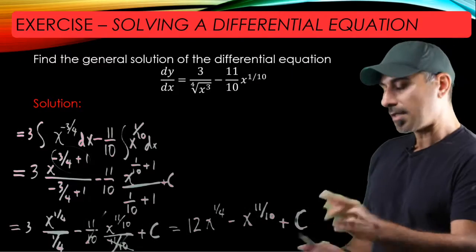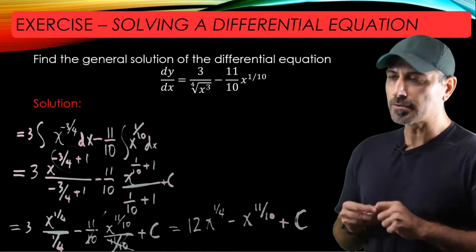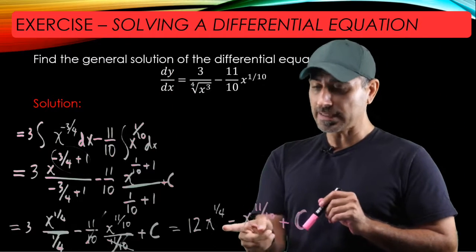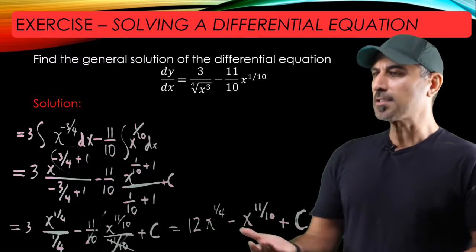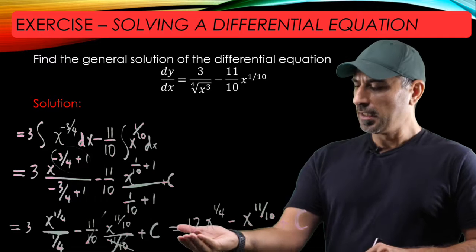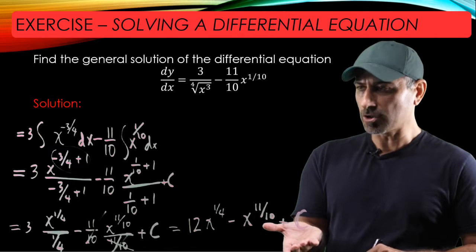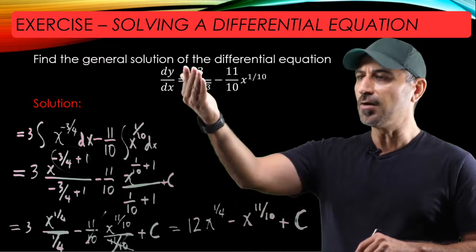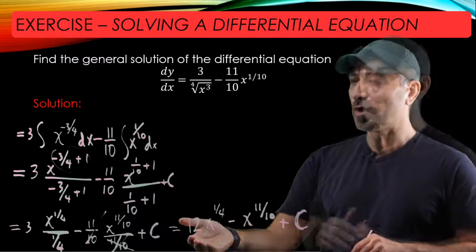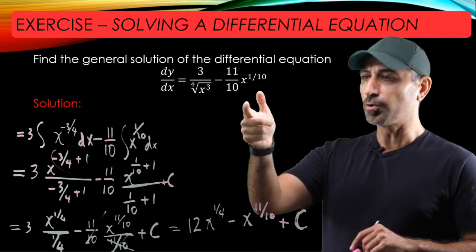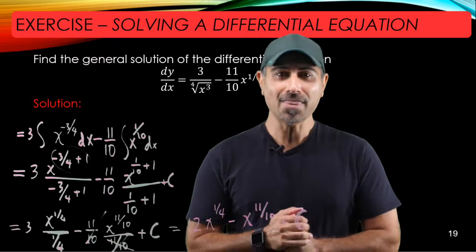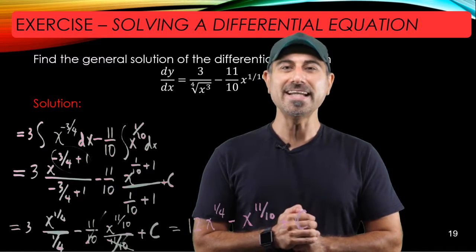So now y — the unknown function — is exactly equal to 12x^(1/4) + x^(11/10) + C, where C is the integration constant. You can verify this by taking the derivative of y and confirming that dy/dx equals the right-hand side of the original equation. That's the end of the video — thanks for watching, I'll see you in another video, bye.